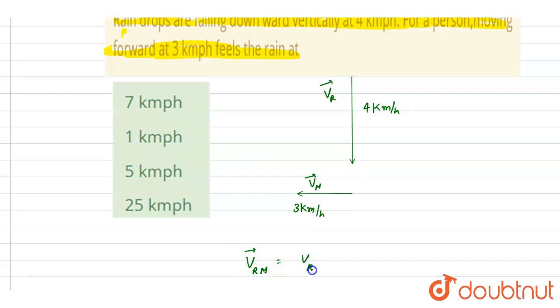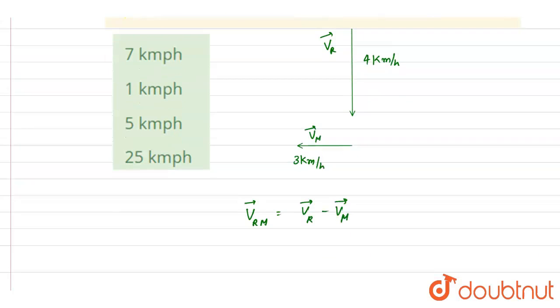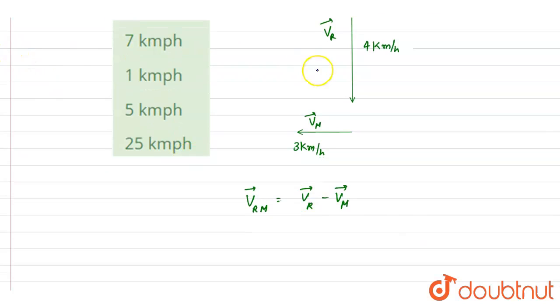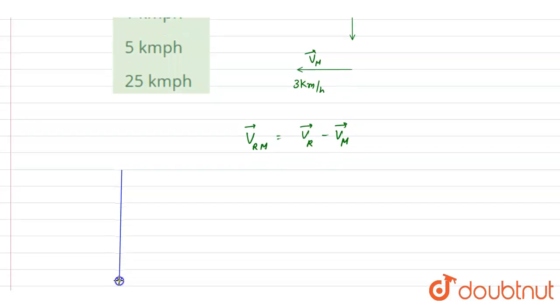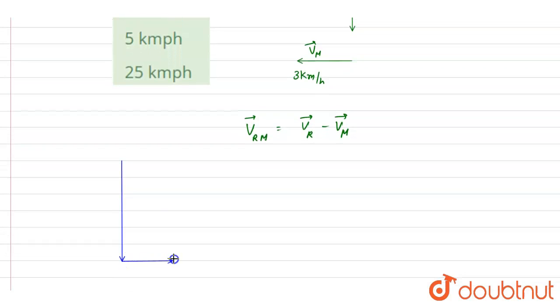will be equal to velocity of the rain minus velocity of the man. So you can just see that if you subtract the velocity of the man from the velocity of the rain, the velocity of the rain is this, and this is the velocity of the man, and this is the velocity of the rain with respect to the man.